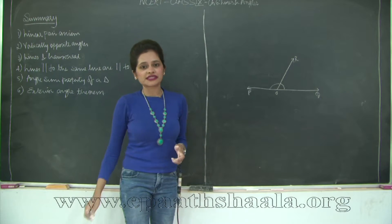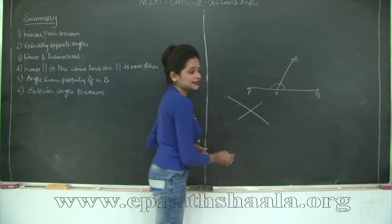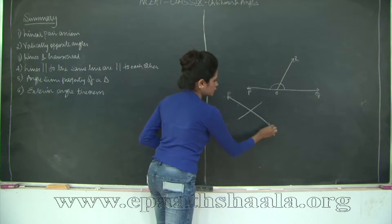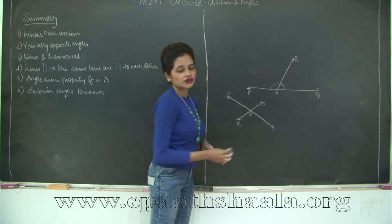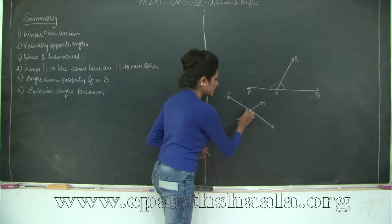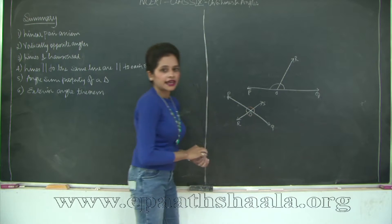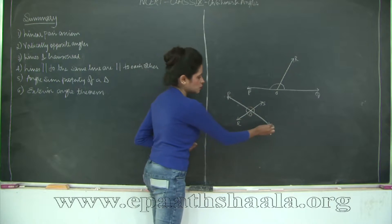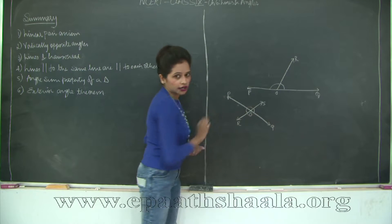Then we have vertically opposite angles. If I have two straight lines, say PQ and RS, intersecting at any point O, then two pairs of vertically opposite angles are formed. The vertically opposite angles are equal: angle POR equals angle QOS, and angle POS equals angle QOR.